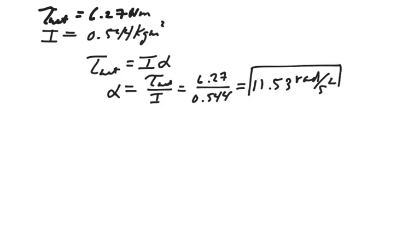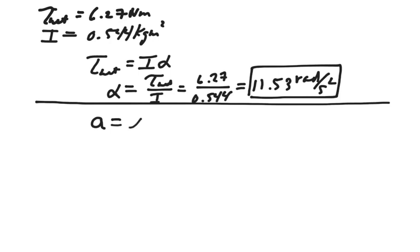This is all fine and dandy. Nice to know. But the question was, what is the linear acceleration at the end of the rod? Well, we need to use a linear to angle conversion or vice versa. In other words, our linear acceleration will equal the angular acceleration times the radius to that point.